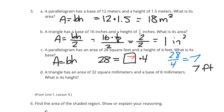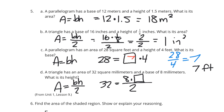A triangle has an area of 32 square millimeters and a base of 8 millimeters. What is its height? Area equals base times height divided by 2 for triangles. We're given area of 32 equals base of 8 times height, all divided by 2. The top part has to equal 64, because 64 divided by 2 gives us 32. So 8 times what equals 64? That's 8. Our solution is a height of 8 millimeters.